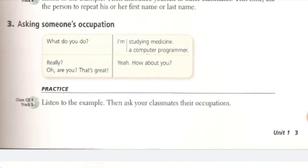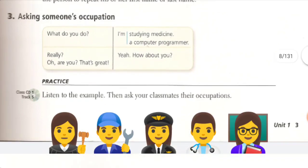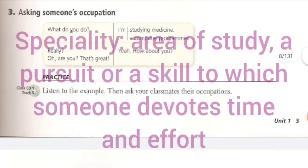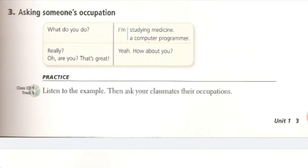There is also the matter of asking someone about their occupation. You ask in this way: 'What do you do?' The answer might be 'I am studying medicine,' 'I am studying computer programming,' 'I am studying engineering,' 'I am studying law,' 'I am studying economics,' 'I am studying philosophy,' or 'I am studying art.' All of these specialties can be used in answer to 'What do you do?'